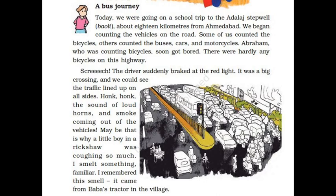We began counting the vehicles on the road — some counted bicycles, others counted buses, cars, and motorcycles. Abraham, who was counting bicycles, soon got bored as there were hardly any bicycles on this highway. The driver suddenly braked at the red light at a big crossing, and we could see traffic lined up on all sides with loud honking horns.